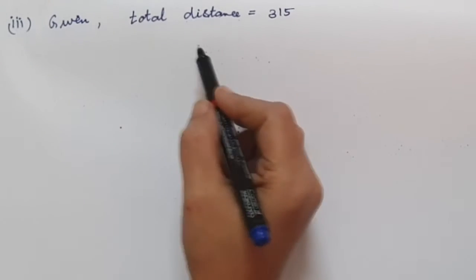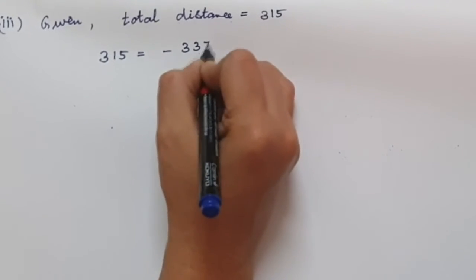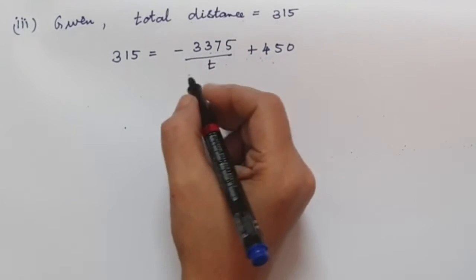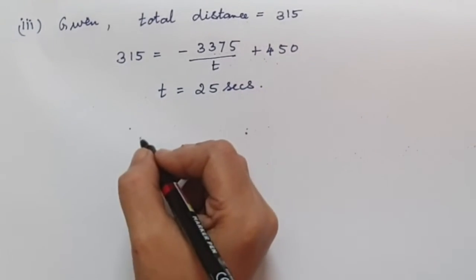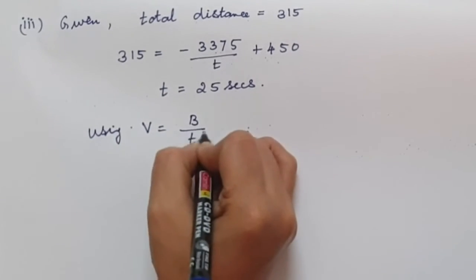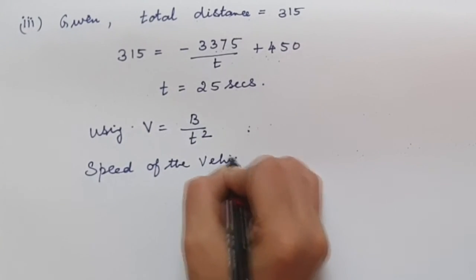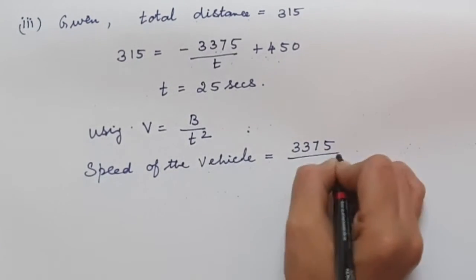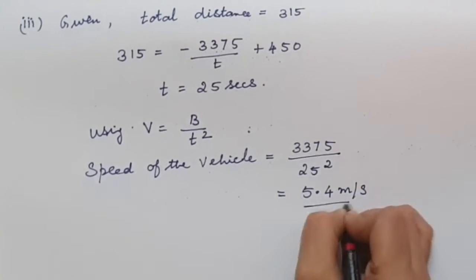For the third part, given the total distance is 315 meters: 315 = −3375/t + 450. Simplifying gives t = 25 seconds. Using V = B/t², the speed = 3375/25² = 3375/625 = 5.4 m/s.